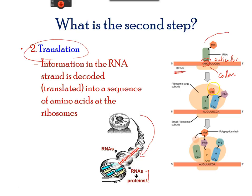The tRNA brings a free amino acid to the other end of the tRNA molecule. The second tRNA molecule reads the next three nucleotide sequence on the mRNA and brings a second free amino acid. The amino acids start joining through peptide bonds as new tRNA keeps bringing new amino acids to extend the polypeptide chain. Translation stops when a sequence of three nucleotides, called the stop codon, is read on the mRNA.